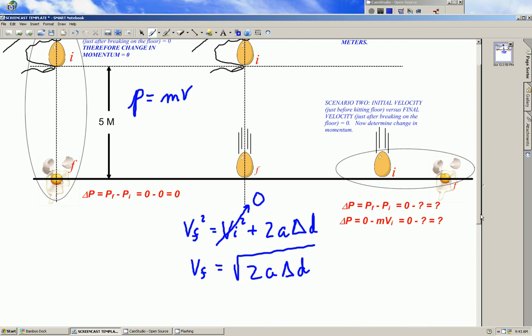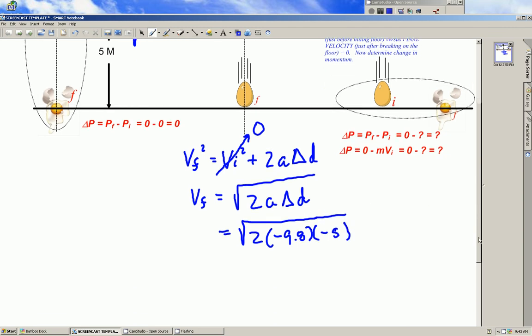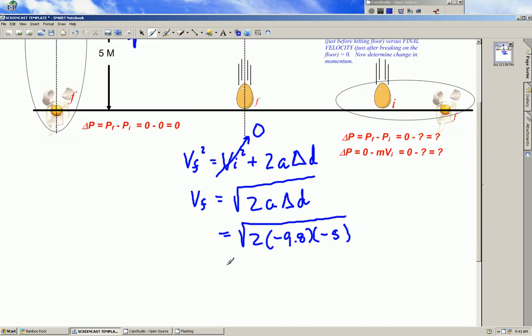Plugging in the numbers, we have square root of 2 times negative 9.8 meters per second squared times negative 5 meters, and that's a negative 5 meters since it's falling from the point in this negative direction. We calculate that and come out with that final velocity is negative 9.8 meters per second.